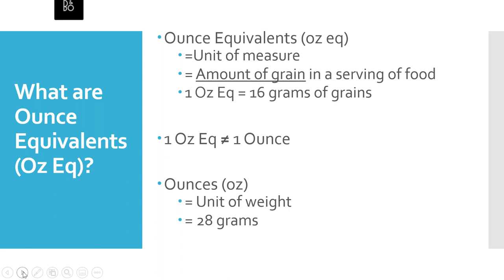CACFP had to start using ounce equivalents to measure portion sizes of grains starting last July 1st, 2022. We understand that the timing wasn't great considering we were still kind of in the midst of the worldwide pandemic. However, the implementation of ounce equivalents in CACFP was actually delayed by about three years. Our use of ounce equivalents was supposed to start in 2019, but it was actually delayed multiple times.